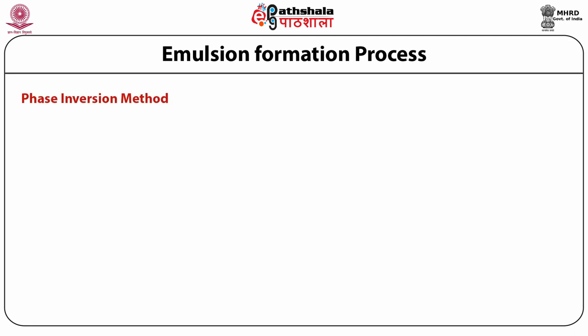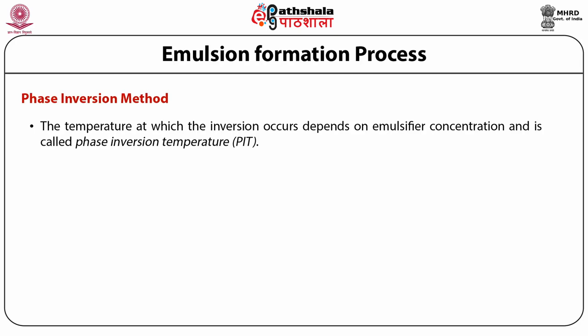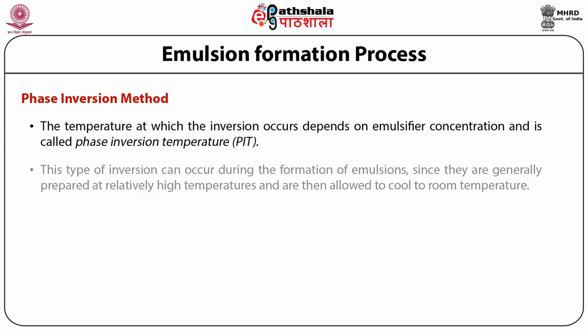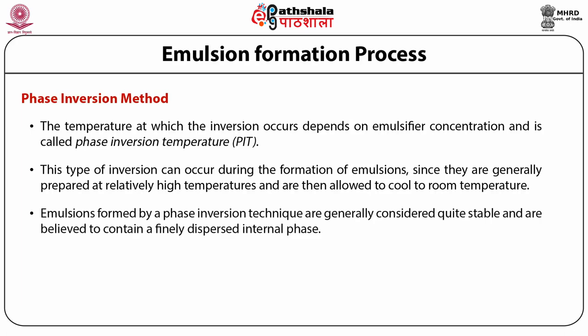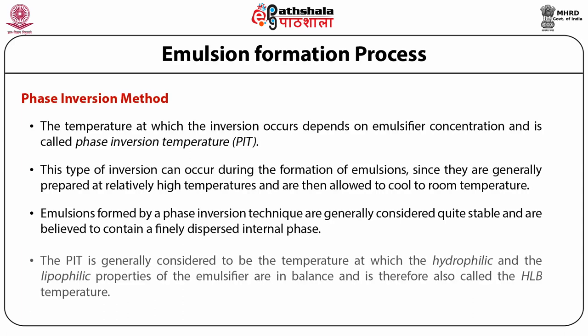In the phase inversion method, the temperature at which inversion occurs depends on the emulsifier concentration and is called the phase inversion temperature (PIT). This type of inversion can occur during emulsion formation since emulsions are generally prepared at relatively high temperatures and then allowed to cool to room temperature. Emulsions formed by this technique are generally quite stable and contain finely dispersed internal phase. The phase inversion temperature is where the hydrophilic and lipophilic properties of the emulsifier are in balance, and is also called the HLB temperature.